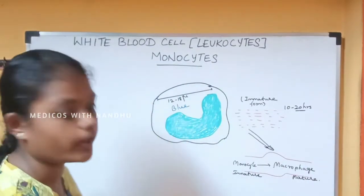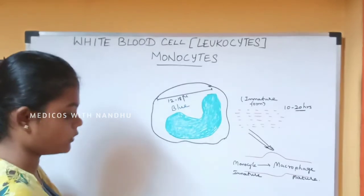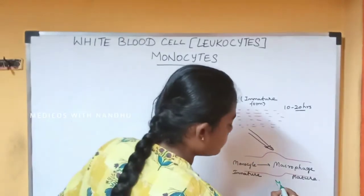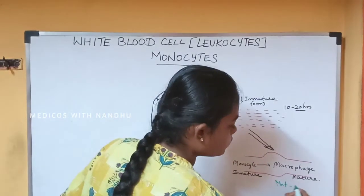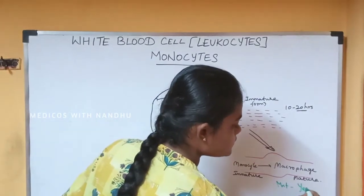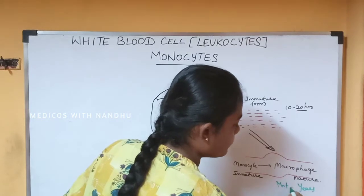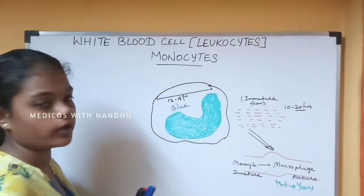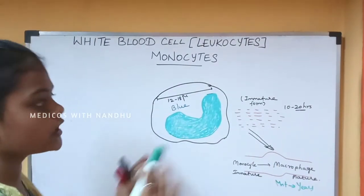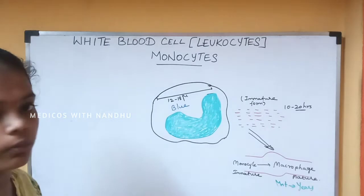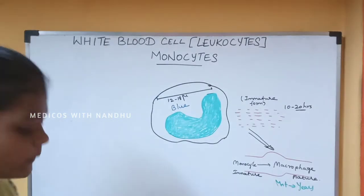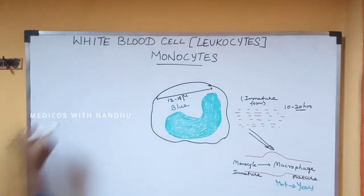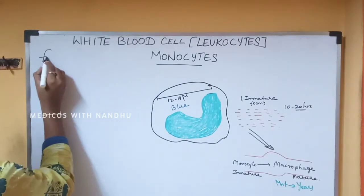In the tissues, as a macrophage, the monocyte-derived cell stays for months to years. So the macrophage has a very long lifespan in the tissues compared to its short time in the blood.